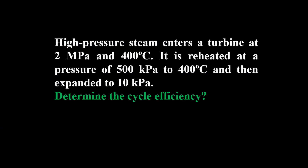We'll be solving a problem on Rankine with reheat. High pressure steam enters the turbine at 2 MPa and 400°C. It's reheated at a pressure of 500 kPa to 400°C — the same maximum temperature — and then expanded to 10 kPa. We need to determine the cycle efficiency.